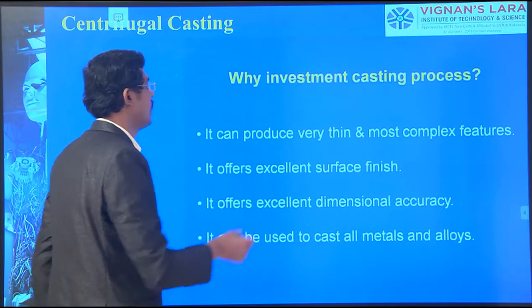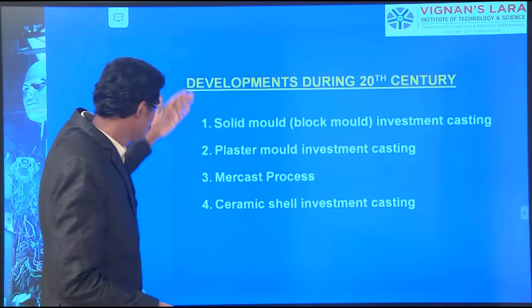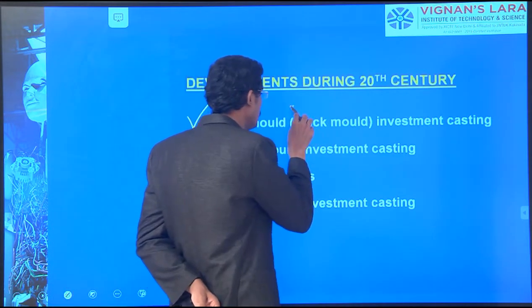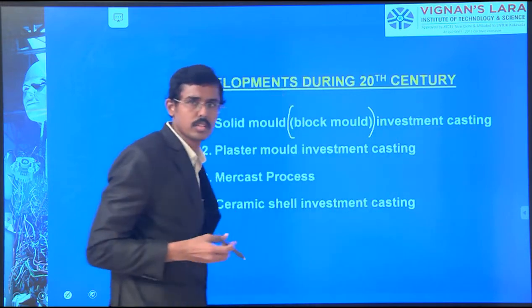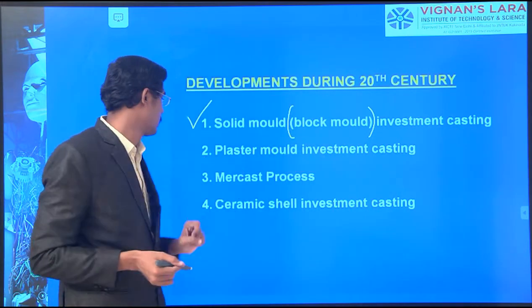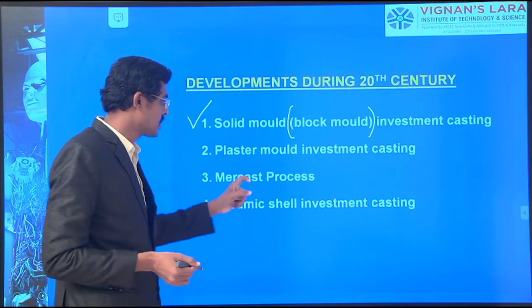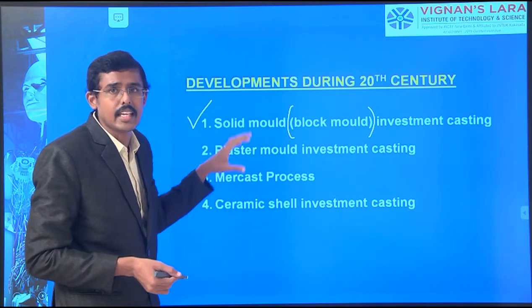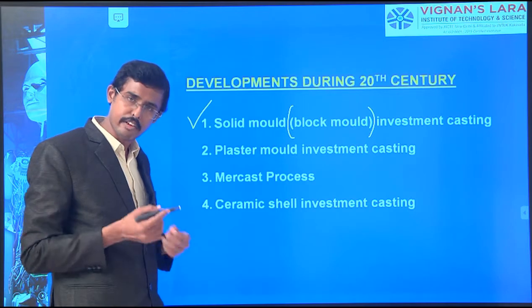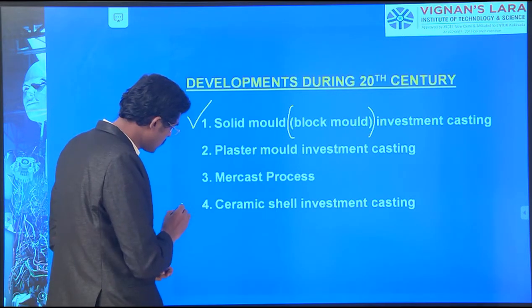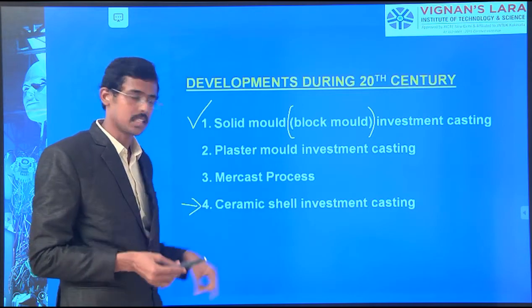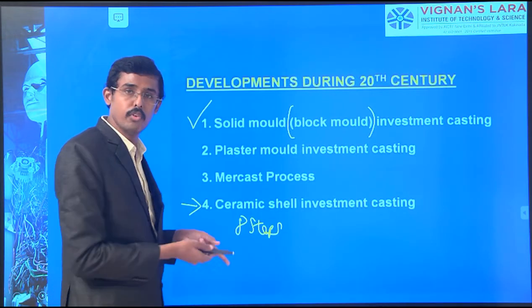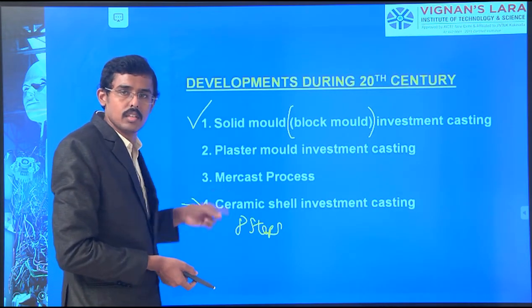Investment casting is one of the important types, developed during the 20th century. It has been divided into types of molds: the solid mold, also called black mold investment casting process; plaster mold investment casting; the Mercast process; and ceramic shell investment casting. We need to concentrate especially on the ceramic shell investment casting, which contains eight steps. Before going there, we should know what happened historically.